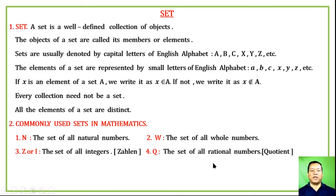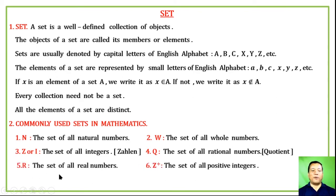The set of rational numbers is denoted by Q — because when an integer is divided by a non-zero integer, we get a quotient, and Q is the first letter of 'quotient.' The set of all real numbers is denoted by R.